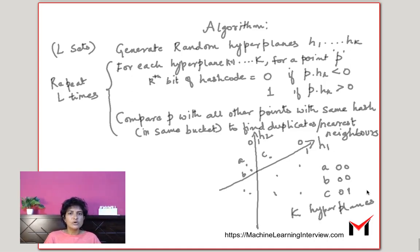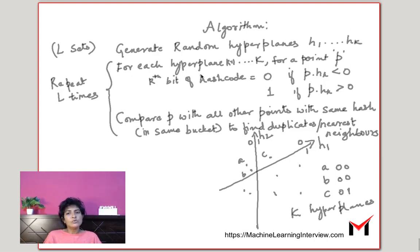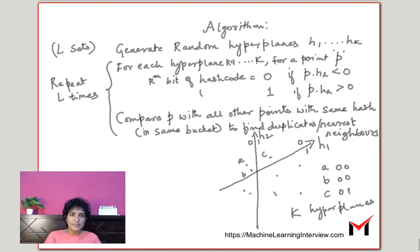Let us look at the algorithm. First, we randomly generate K hyperplanes. Then for each data point P and each hyperplane k from 1 to K, the kth bit of the hash code for P is 0 if P dot H_k is less than 0 — meaning it lies on one side of the hyperplane — and it is 1 if P dot H_k is greater than 0, lying on the other side. This is just the dot product.